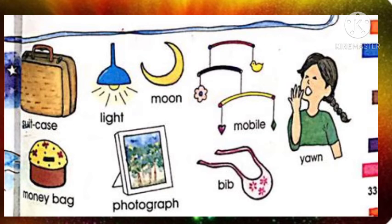So students, we have done our today's task. Let's revise these pictures again. Look at the first picture. It's a suitcase. Next one is a money bag. Next is a light. Then here is a photograph and a moon also.